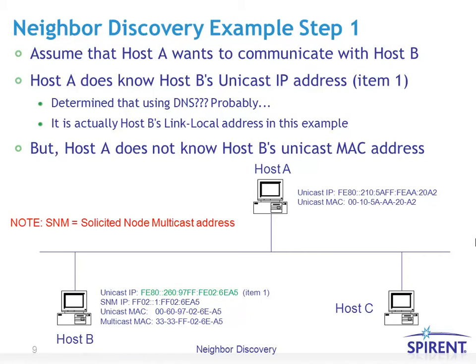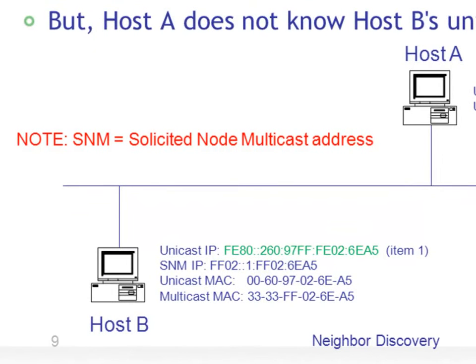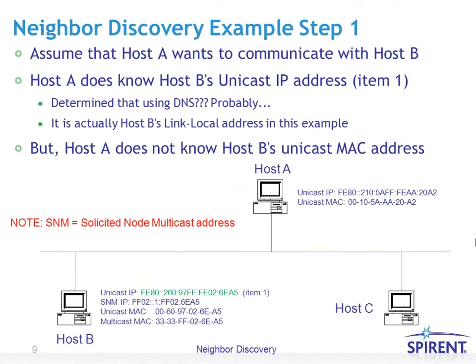Step one: host A wants to communicate with host B. Host A knows host B's unicast IP address — most likely determined using DNS, domain name service. In this example it's host B's link-local address, but it could be any globally unique address assigned to host B. The problem is host A does not know host B's unicast MAC address — it knows the IP address but doesn't know a MAC address to which to send messages.